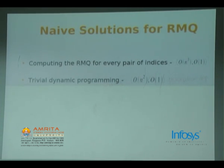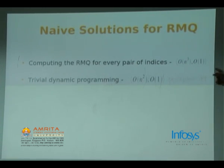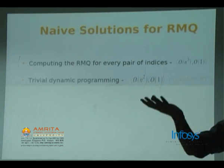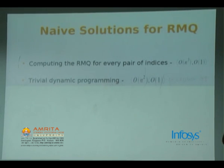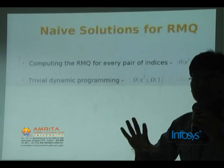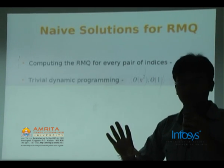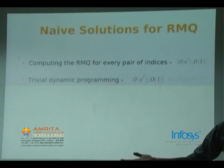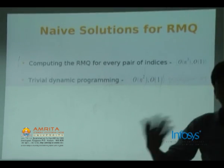Can you come up with nice solutions? One thing you can do: for every RMQ pair (i,j) you store the answer beforehand, and whenever a query arrives you output it in O(1). You can do that — for every i,j you store the answer beforehand and whenever you get a query you report it.